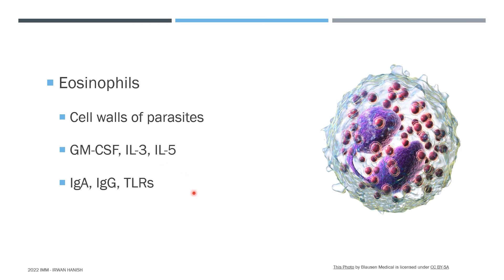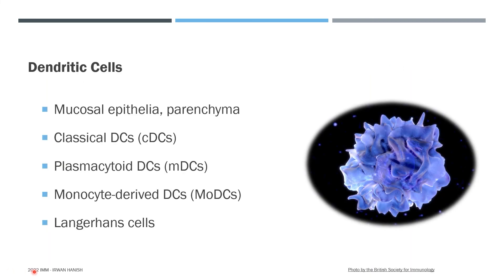To signal an attack and fire their granules, eosinophils use receptors for IgA and IgG, and they also have TLRs or Toll-like receptors. Dendritic cells, or DCs, can be found in mucosal epithelia and in parenchyma — the functional tissues of our organs. Because DCs are found on epithelia and organ tissues, they serve as sentinels to detect pathogens and initiate the innate response, and they also serve as APCs (antigen-presenting cells), which is part of the adaptive response.